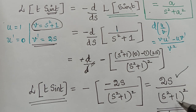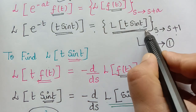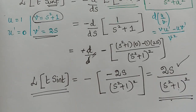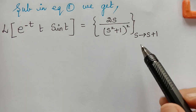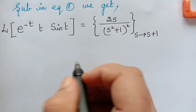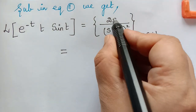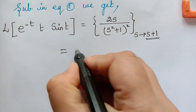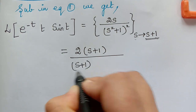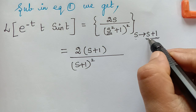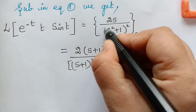Now we substitute this result into equation 1. We replace s with s+1 throughout: the numerator becomes 2(s+1), and the denominator becomes [(s+1)²+1]². Expanding (s+1)² using the (a+b)² formula gives s²+2s+1, so the denominator inside becomes s²+2s+1+1 = s²+2s+2.